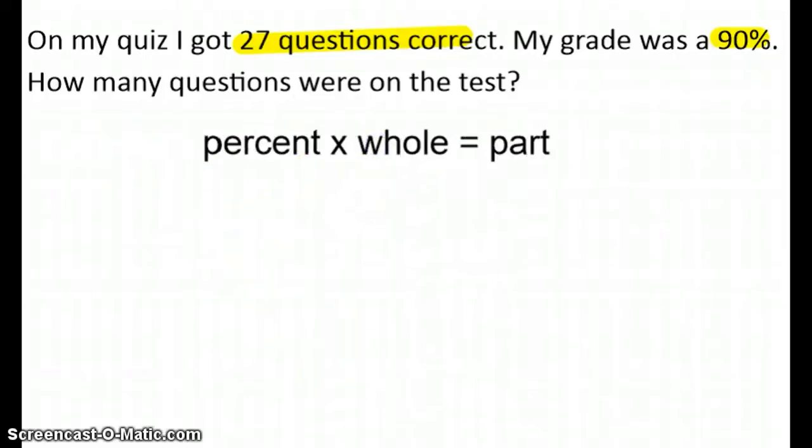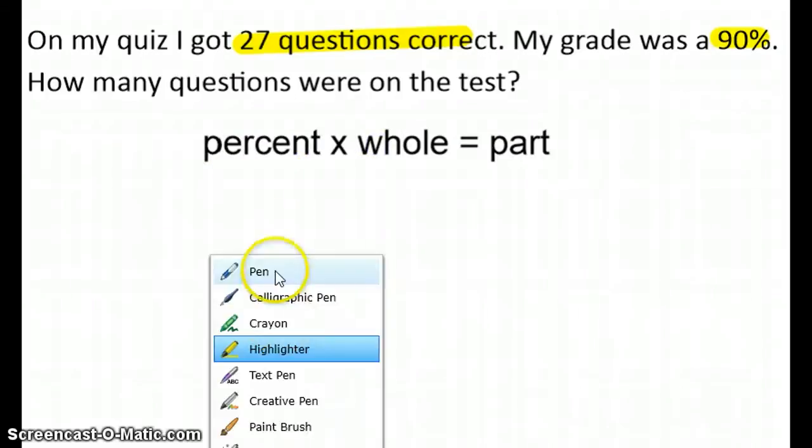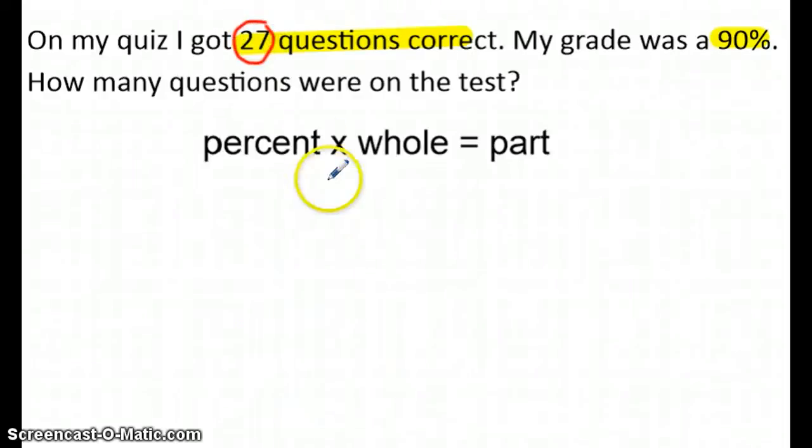So percent times whole is equal to the part. We said 27 represented the part, because that is a piece of the test. We don't know how many questions are in there, because 27 was equivalent to a grade of a 90%. Percent, we said, was 90. It is very important to write the percent as a decimal. Times the whole is equal to 27. So 0.90 times some number is equal to 27.